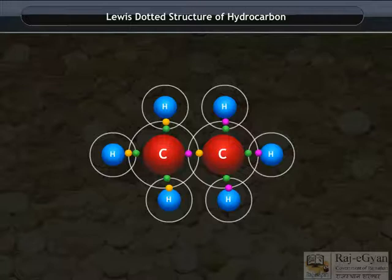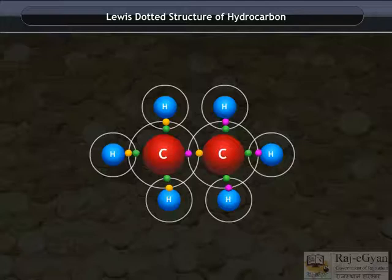This structure gives the Lewis dotted structure. Keep in mind that the shared electrons are counted in the valence shell of both the atoms sharing it.